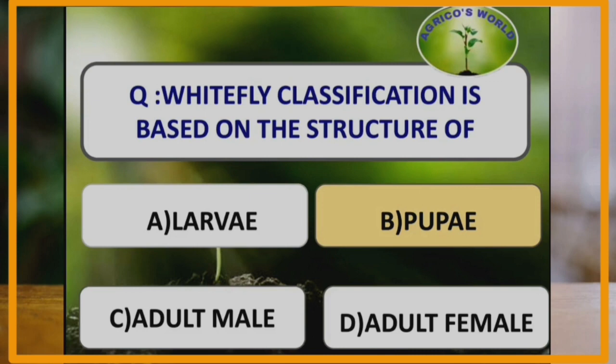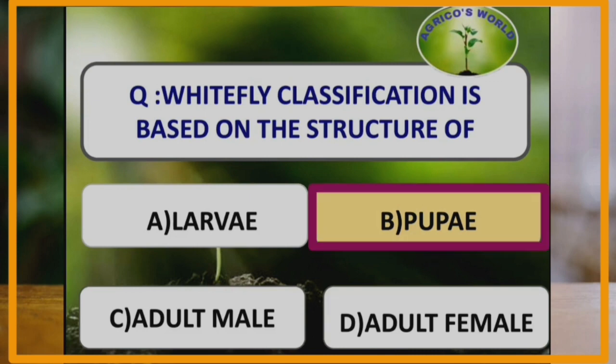Thysanoptera is the link between Hemiptera and Endopterygota. Whitefly classification is based on the structure of pupae.